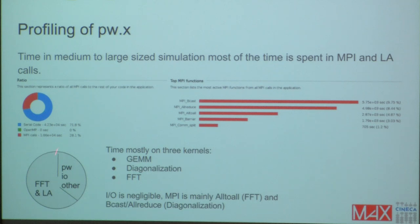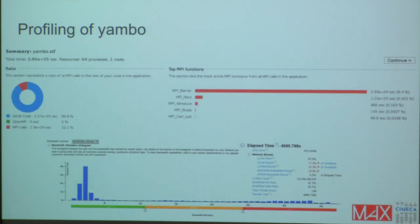When you consider instead the blue part, the time is mostly spent in three kernels. I'm more or less repeating what has already been presented, so I don't want to spend too much time on this. It's general matrix-matrix multiplications, diagonalization, and FFT. So this tells me that if I want to understand and model the performances of Pw, I have to really take into account collective communication and these three kernels.